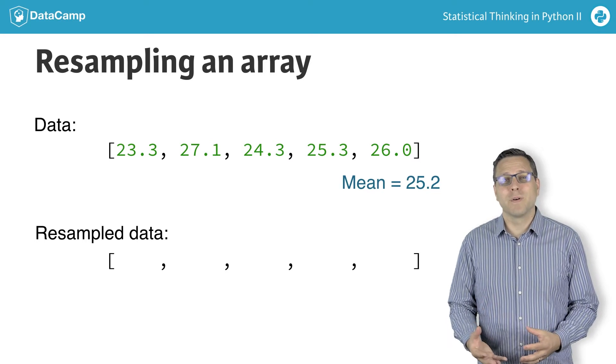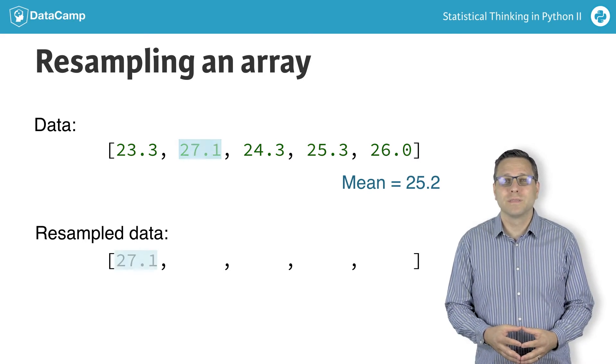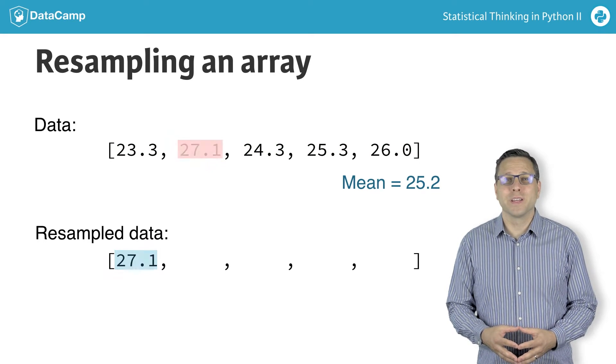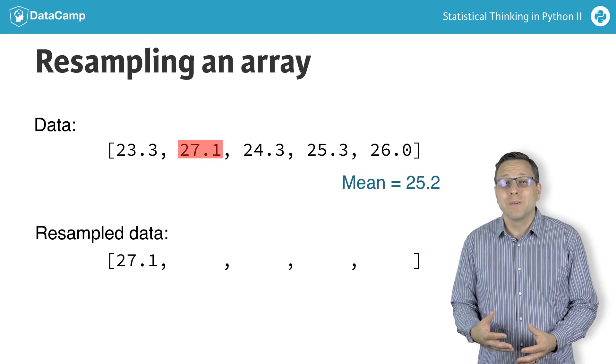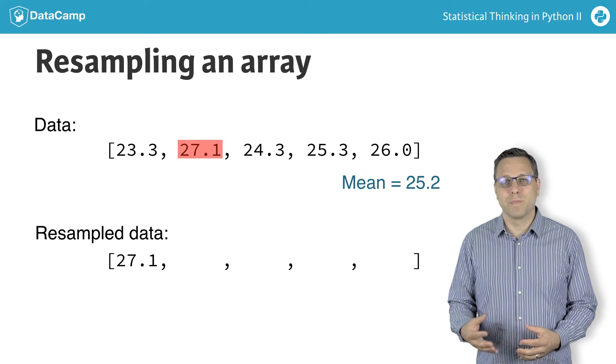To resample an array of measurements, we randomly select one entry and store it. Importantly, we replace the entry in the original array, or equivalently, we just don't delete it. This is called sampling with replacement.